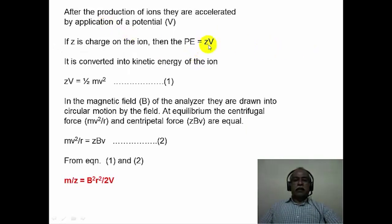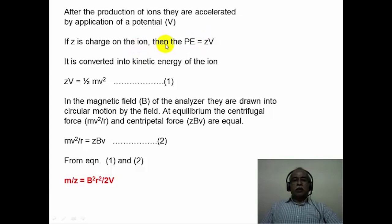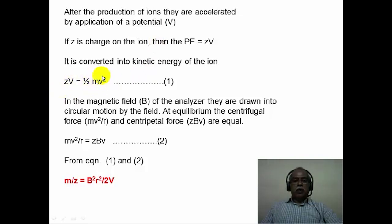After the production of ions, they are accelerated by application of a potential V. The potential energy of the ions produced under the acceleration voltage V corresponds to the charge times the potential, which is zV. This is converted into the kinetic energy of the ion during acceleration. So zV becomes ½mv² during the process of acceleration, where m is the mass of the ion and v is the velocity of the ion under the acceleration voltage V. Capital V is the applied acceleration potential and small v is the velocity of the ions produced.